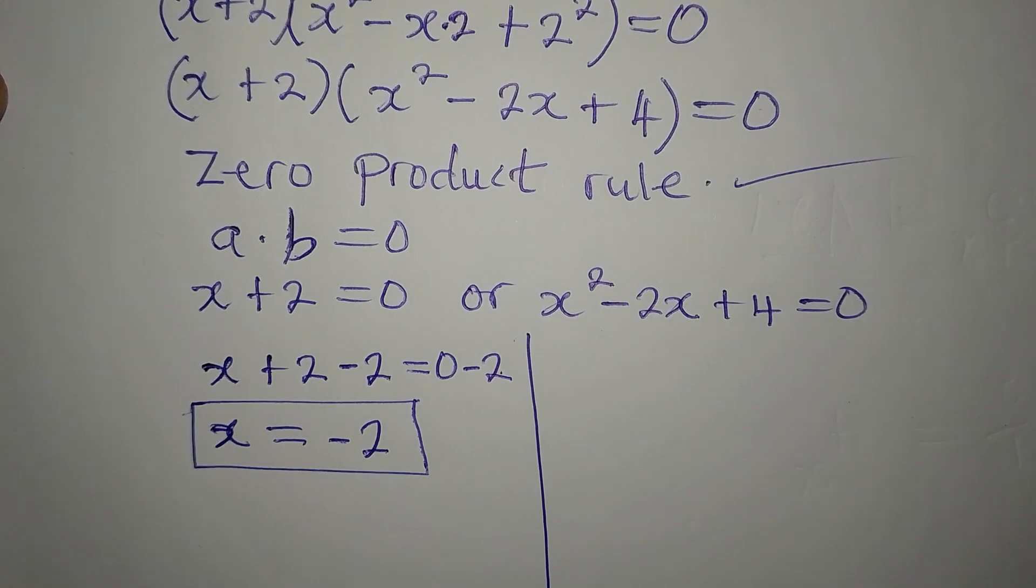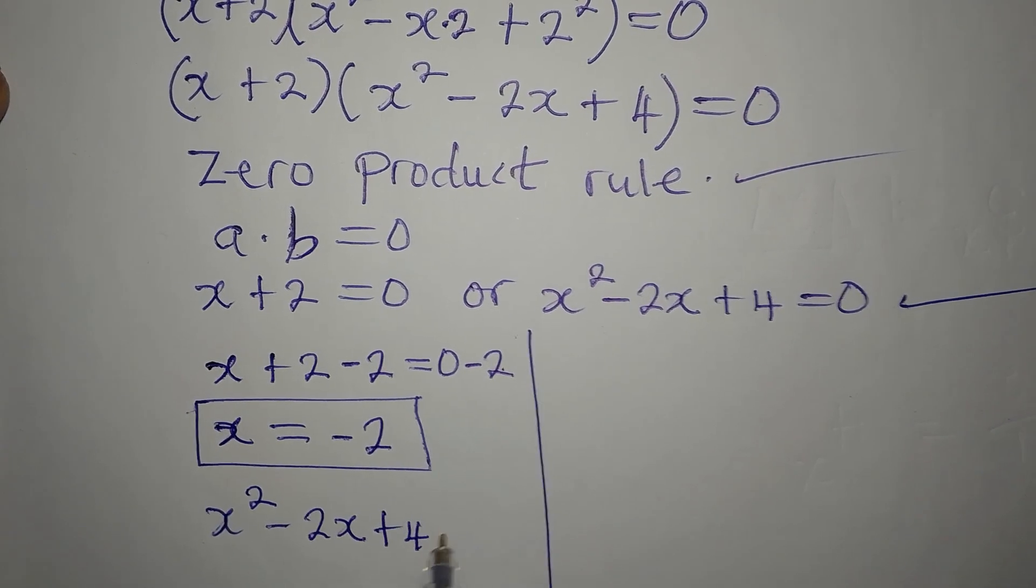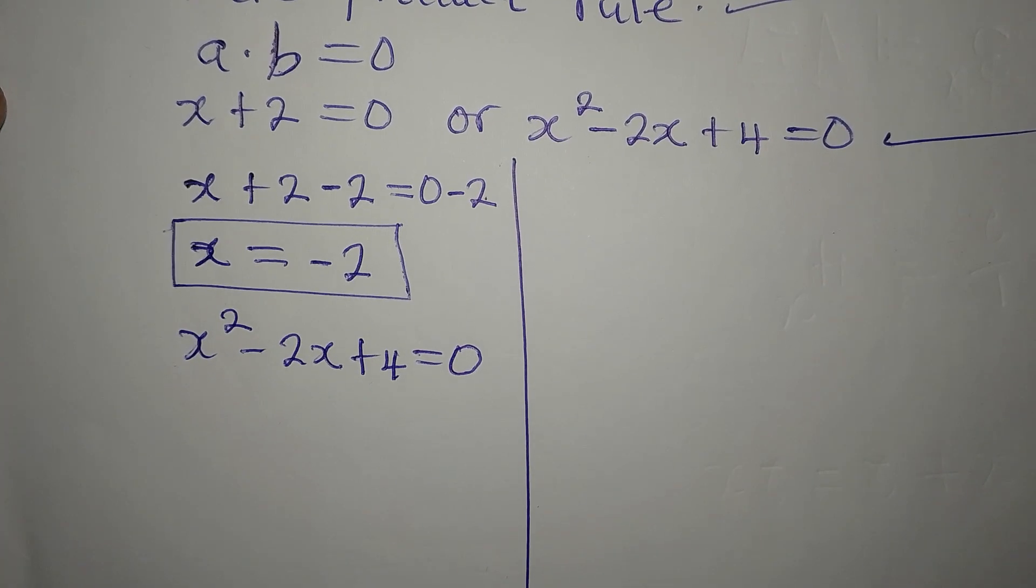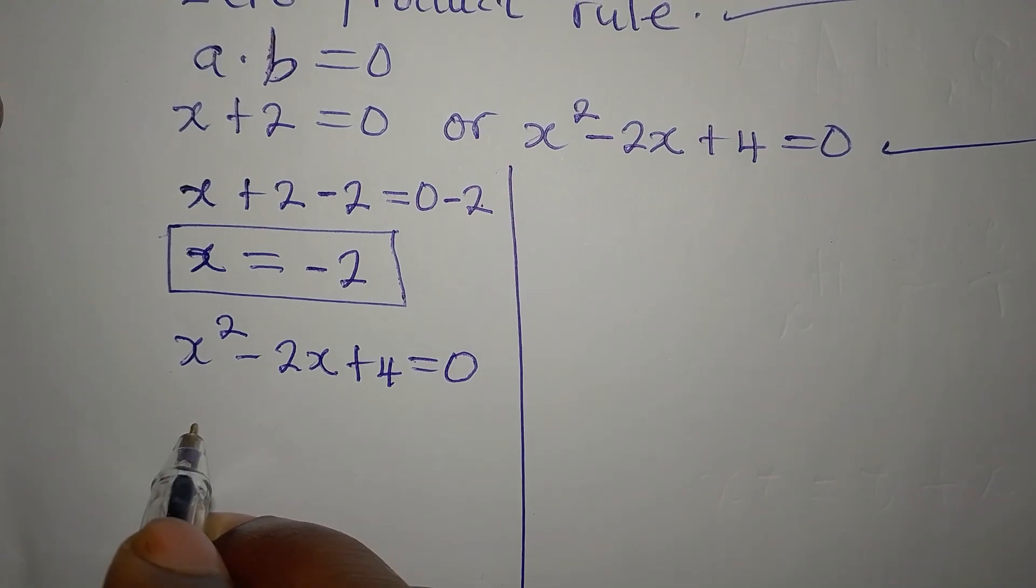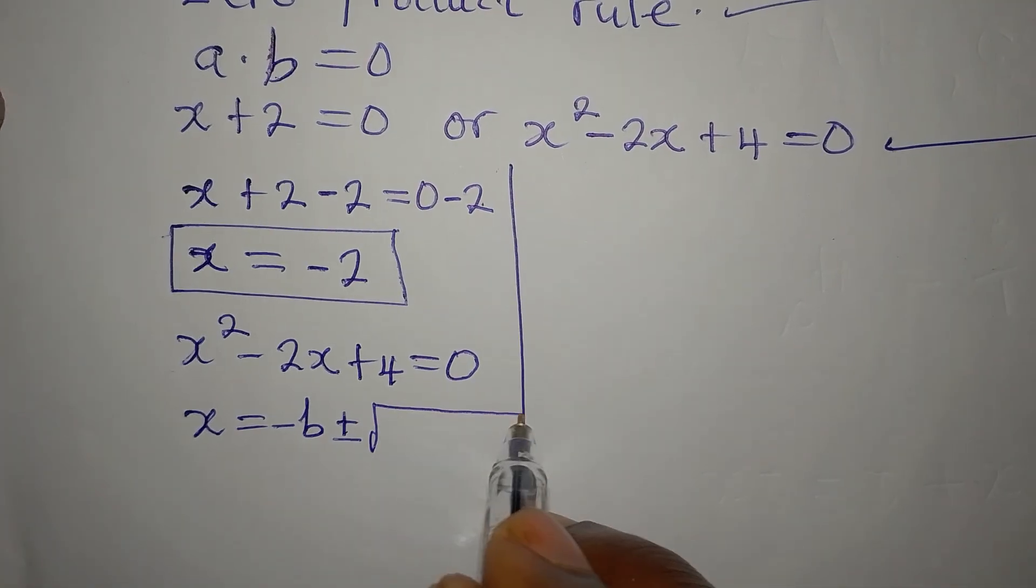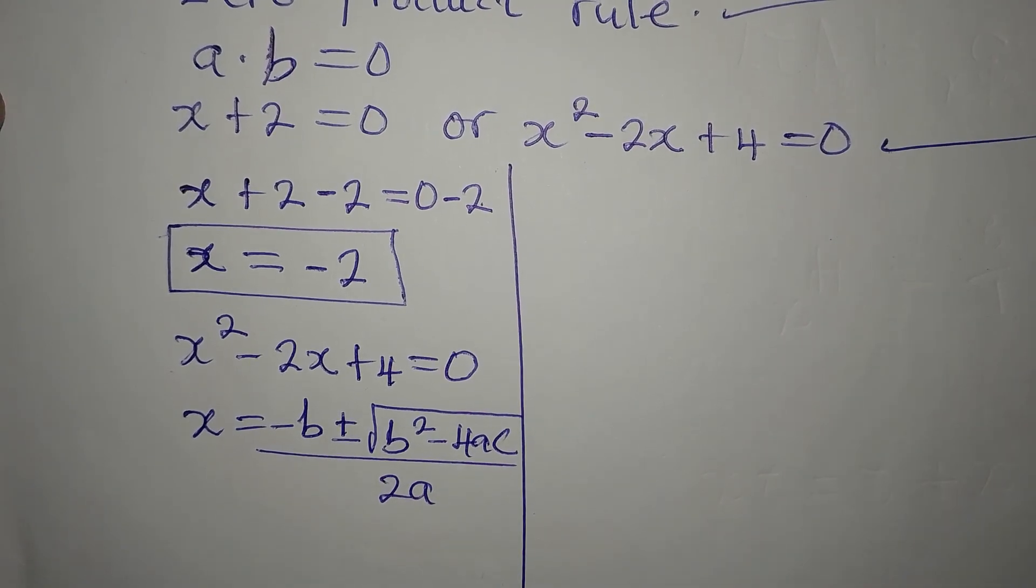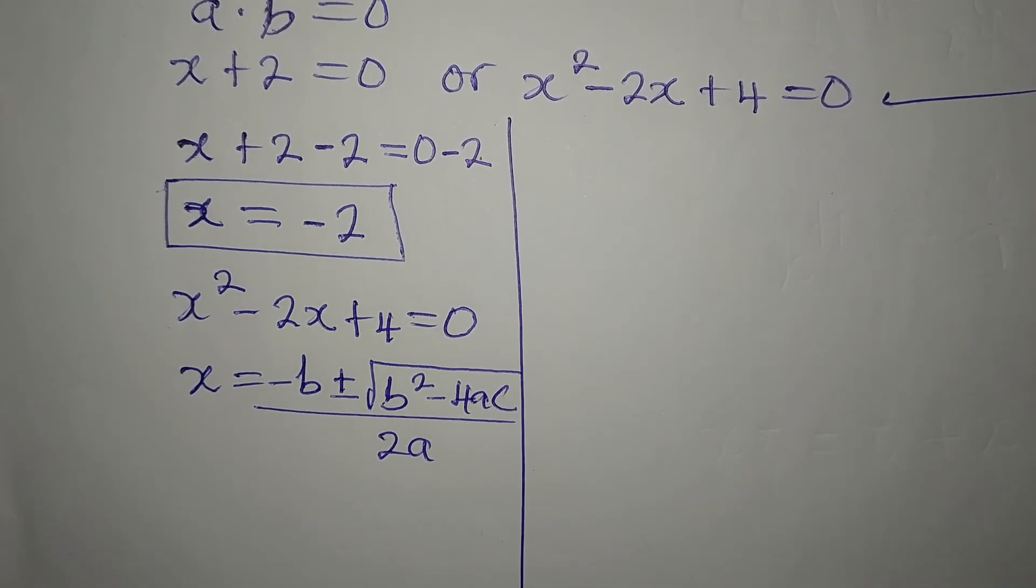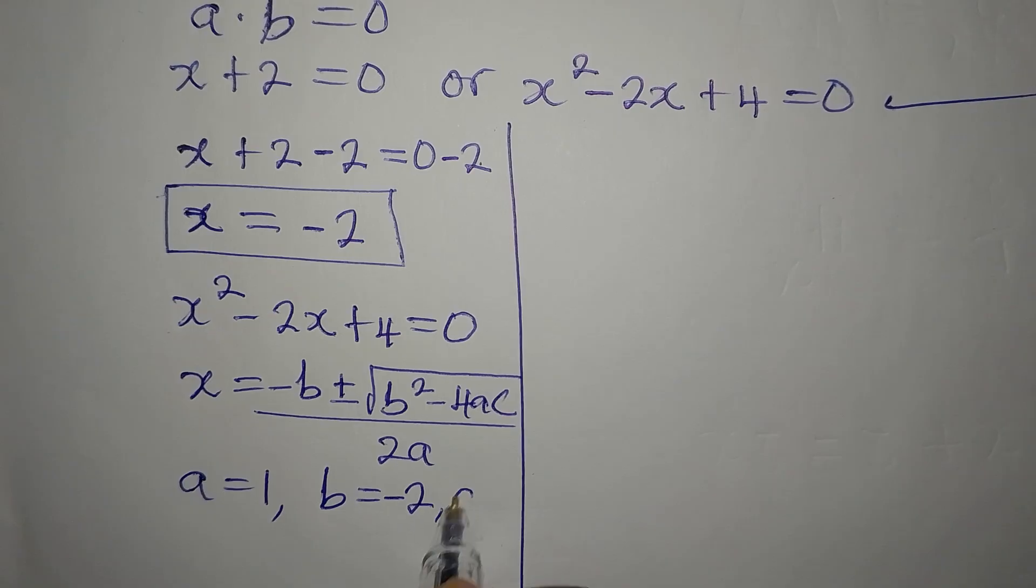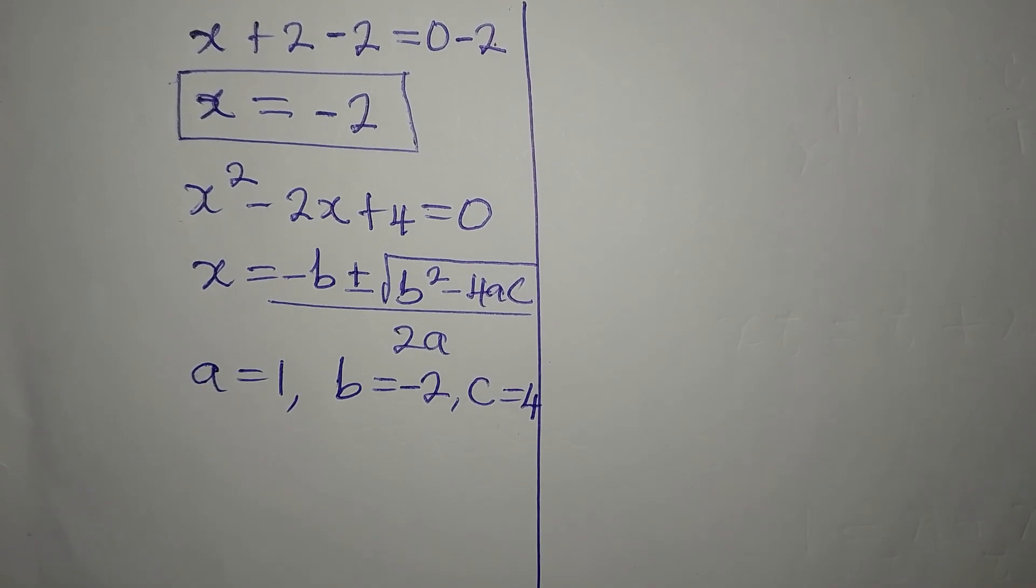So to get the other solutions, we'll pick this equation, which is x squared minus 2x plus 4 equals 0. We're going to pick that and then solve it quadratically. Let's use this formula for that. x equals minus b plus or minus square root of b squared minus 4ac all over 2a. So the next thing you're going to do is to know your a, b, c. Our a is 1, b is minus 2, and c is 4, the constant. So we'll now substitute into this quadratic formula.